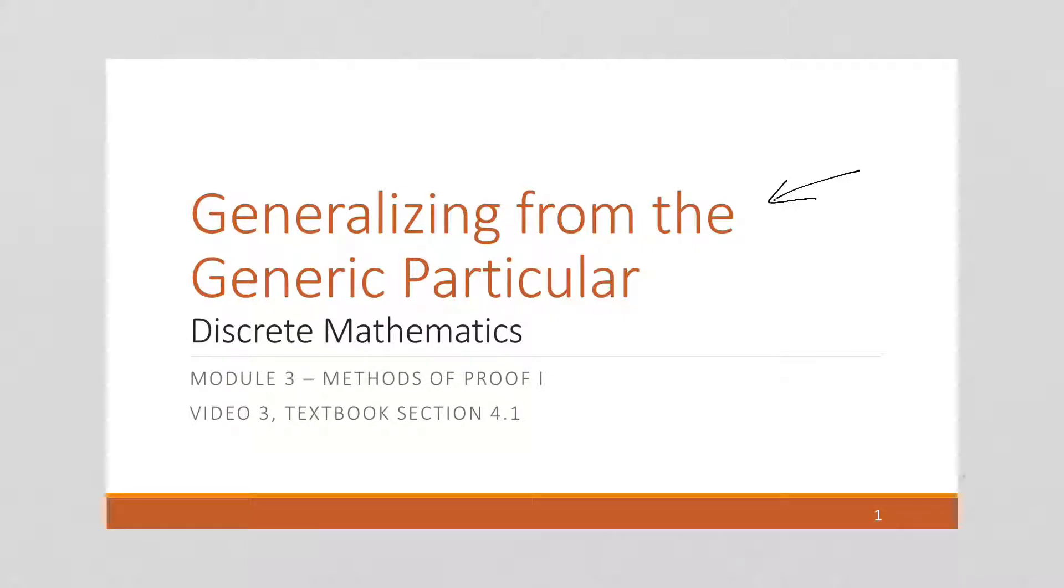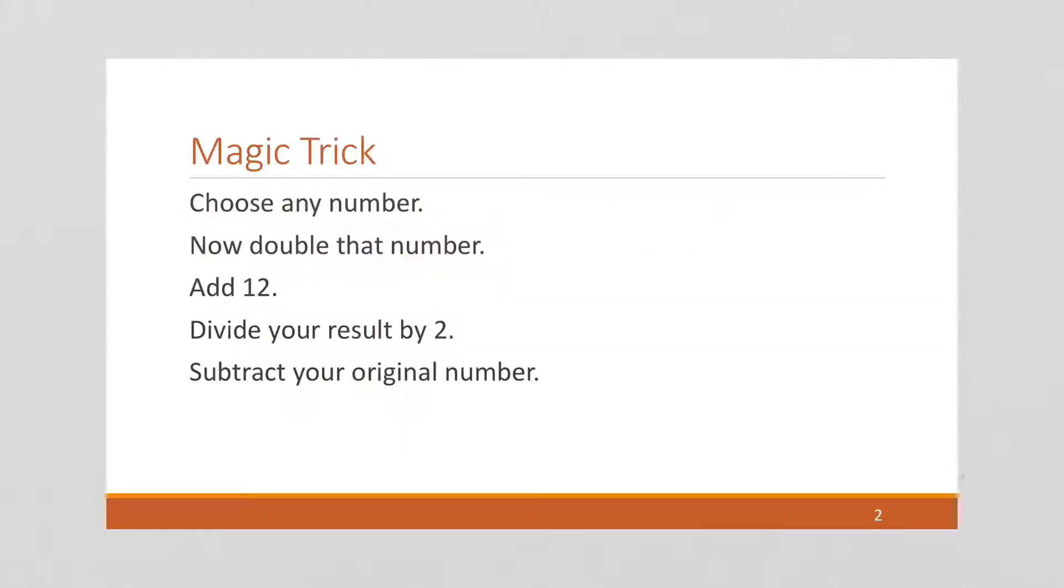So I'm going to give you an example. First, we're going to do a magic trick. You pick your own number. I'm going to pick the number 5.5. You can pick any number you want. It can be positive, it can be negative, it can be fractional.